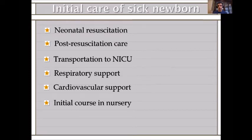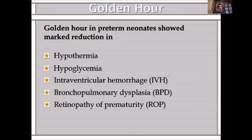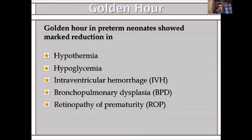The initial care of sick newborns is composed of neonatal resuscitation, then post-resuscitation, transport to an ICU, respiratory support, cardiovascular support, and stabilization at arrival to the nursery. There is clear evidence about using golden hour practice in neonates — especially in preterm babies — with marked reduction in hypothermia, hypoglycemia, IVH, BPD, and ROP when this procedure is implemented.